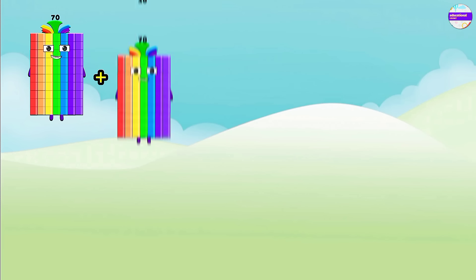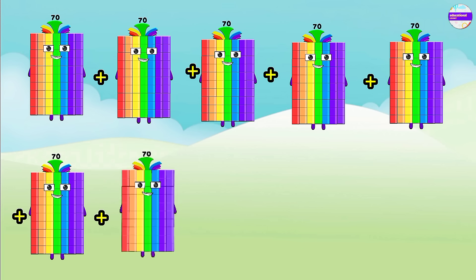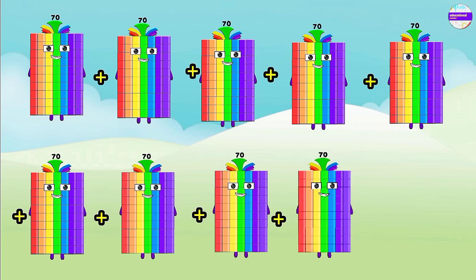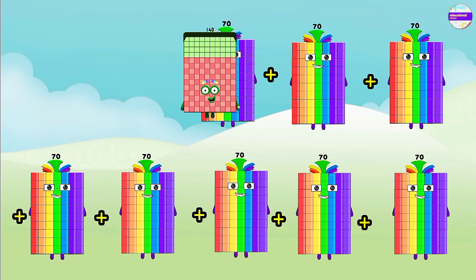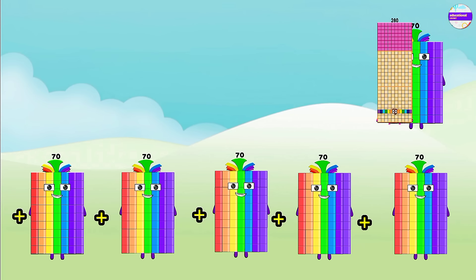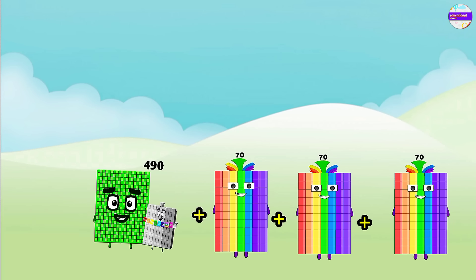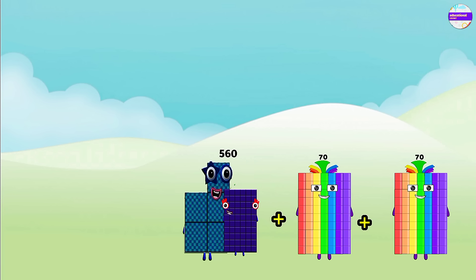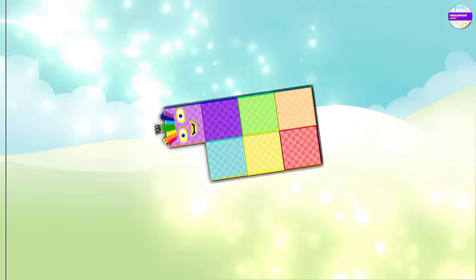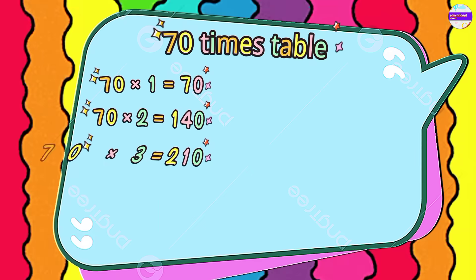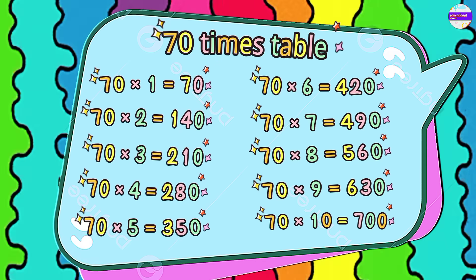It's time to make the 70 times table by using repeated addition. 70 plus 70 is 140, 210, 280, 350, 420, 490, 560, 630, and the last one is 700. Now you can see the 70 times table.